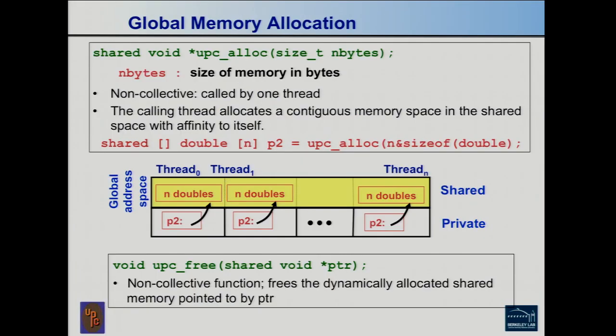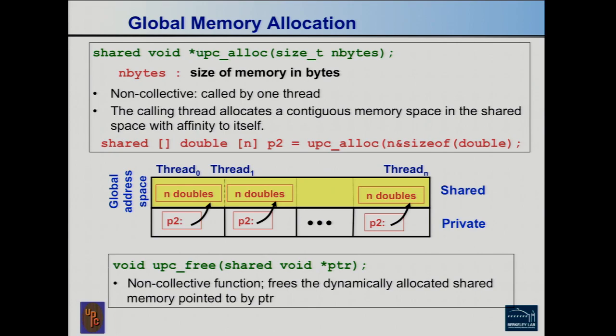What about more interesting kinds of data structures? In C you have malloc for irregular data structures, and in UPC you have analogous versions like upc_alloc. You can allocate data sitting inside the global address space. Regular malloc puts things in your private address space — not just stack variables, but heap variables. If you want to put things in the shared address space, you use upc_alloc. There's both a collective and a non-collective version — the collective spreads data over all threads, and there's also a non-collective version for a local piece of the shared address space.